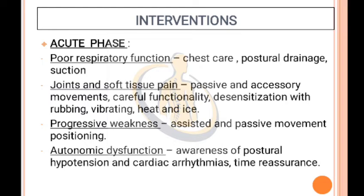Acute Phase Interventions: Poor respiratory function — managed with chest care, postural drainage, and suction. Joint and soft tissue pain — managed with passive and accessory movements, careful positioning, desensitization with rubbing, vibration, heat, and ice. Progressive weakness — managed with assisted and passive movement positioning. Autonomic dysfunction — awareness of postural hypotension and cardiac arrhythmias, reassurance.